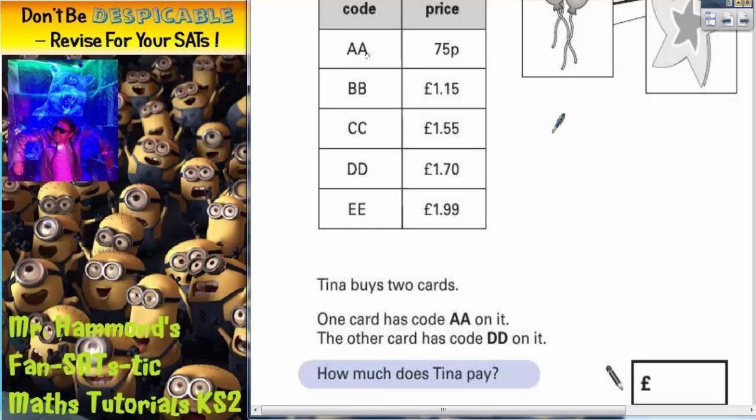Well, AA is 75p and DD is £1.70. Now the problem we've got here is that they are in different formats. This one's in pence and this one's in pounds. So first of all, we need to change them into the same format. So 75p, you could also write £0.75 like that. And now what we've got to do is add them together.